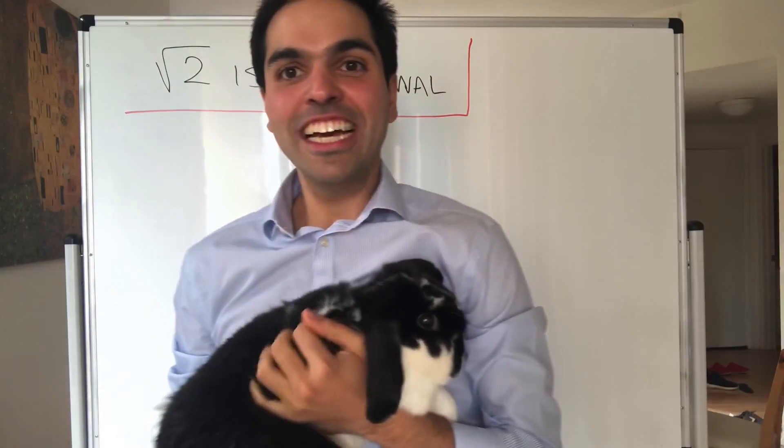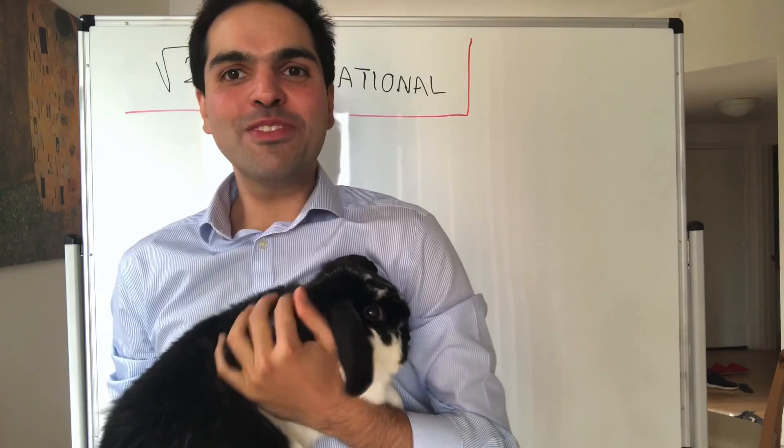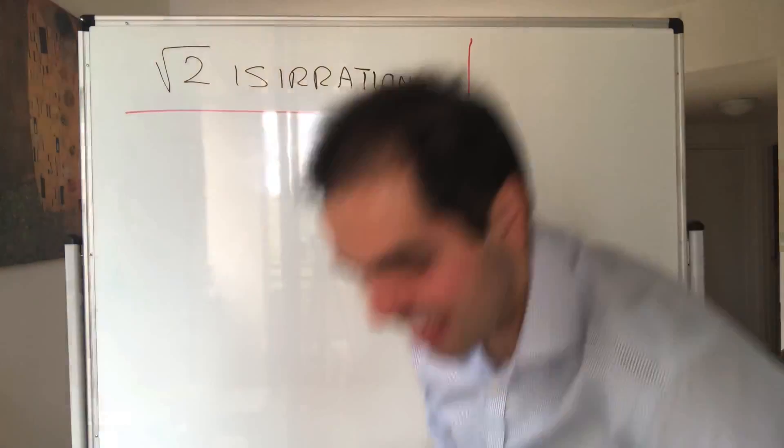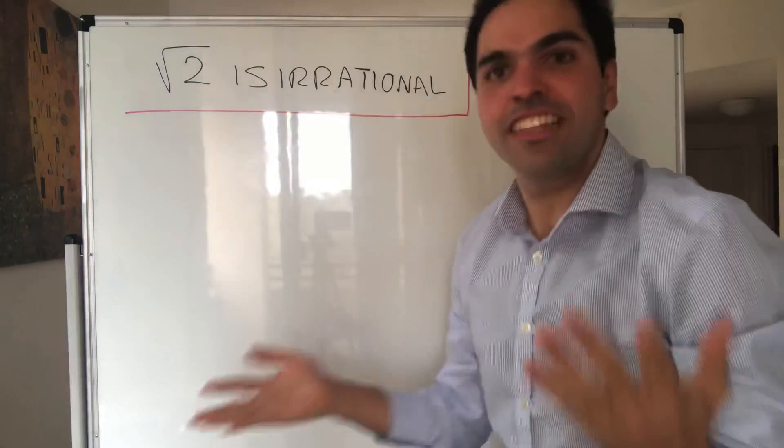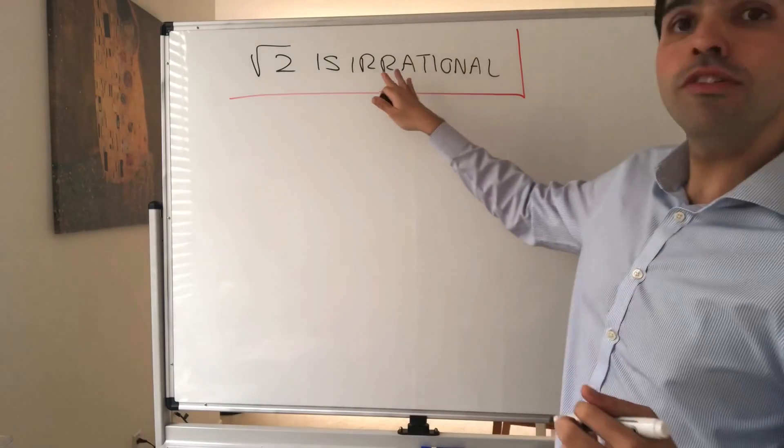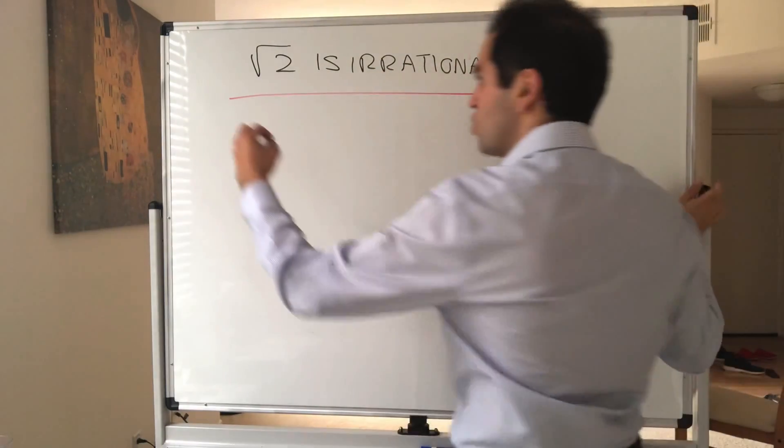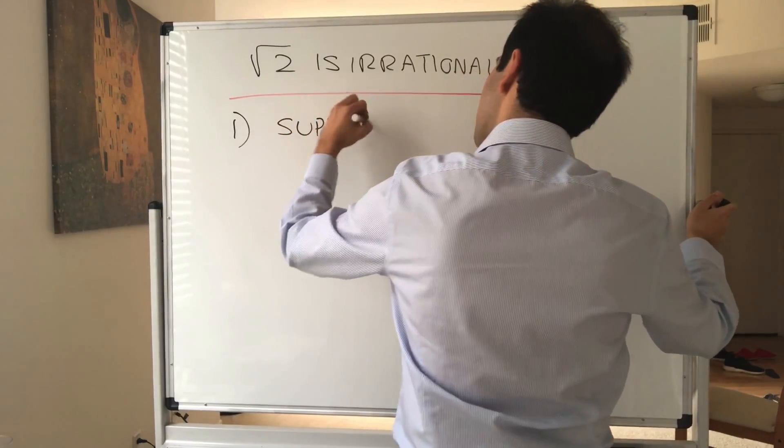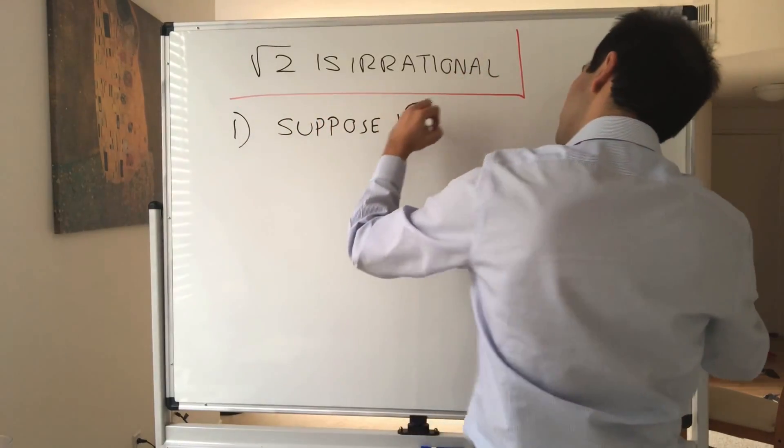All right, thanks for watching. Today we will prove one of the most important theorems in all of math - namely that square root of 2 is irrational. So it is a very classical proof by contradiction. So what we will do, let's suppose that square root of 2 is rational.